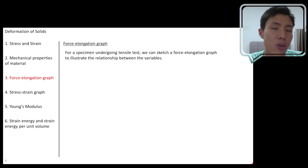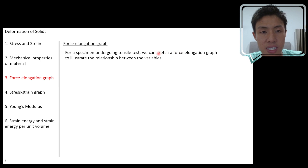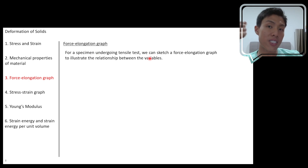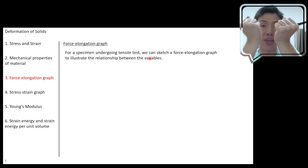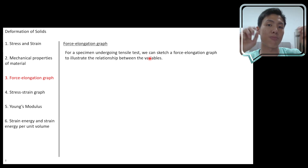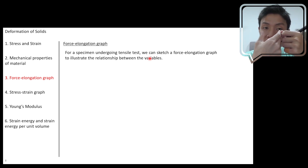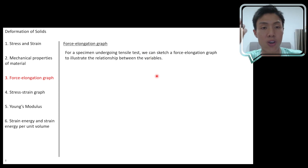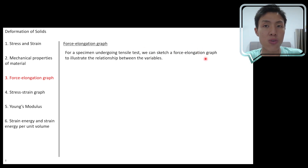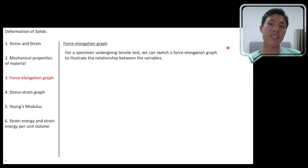When we have a specimen undergoing tensile stress, we can sketch a force-elongation graph to illustrate the relationship between the variables. The manipulated variable is the force, since we are exerting a force to stretch the specimen. The responding variable is the amount of change in length experienced by the specimen — we call it the elongation. We can plot a graph of force against elongation to see the relationship between the two variables.